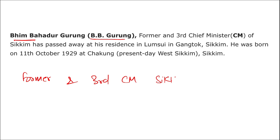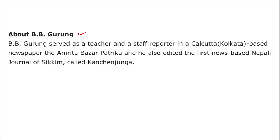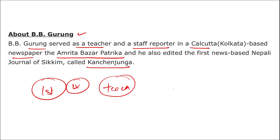BB Gurang recently passed away in Sikkim. He was born on 11th October 1929. He belongs from Sikkim and was the third Chief Minister of Sikkim. He served as a teacher and staff reporter in the Kolkata-based newspaper Amrita Bazar Patrika, and edited the first news-based Nepali journal of Sikkim named Kanchan Janga.